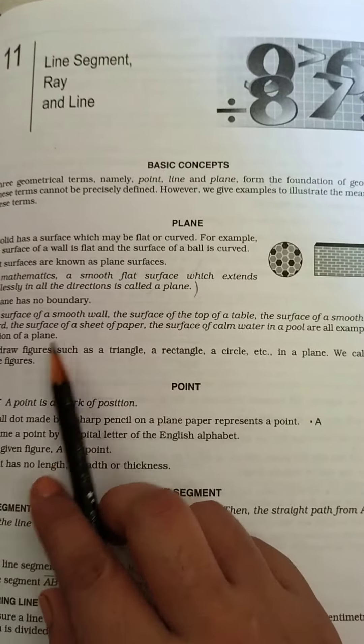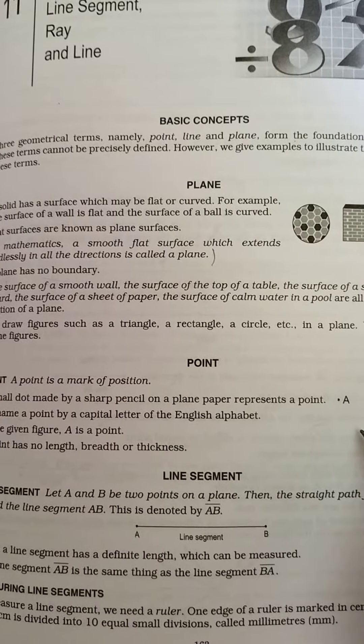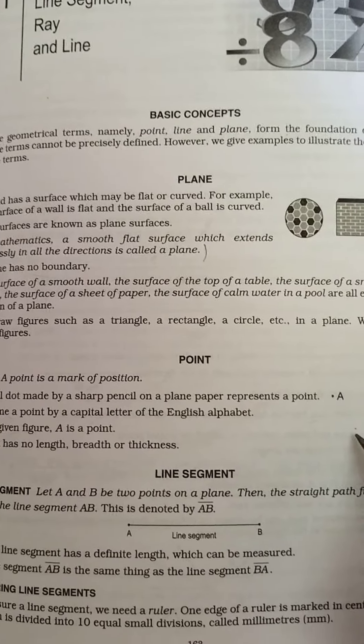We name a point by a capital letter in the English alphabet. In the given figure, A is a point. A point has no length, breadth, or thickness.